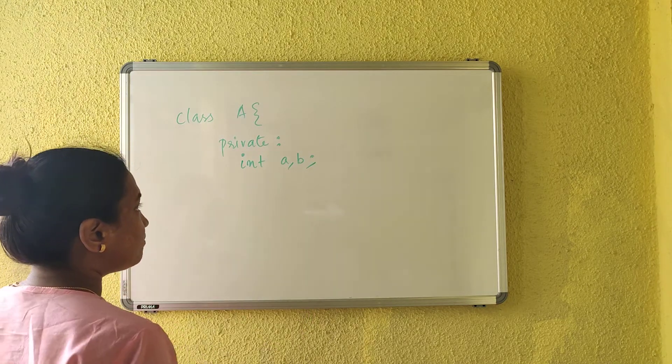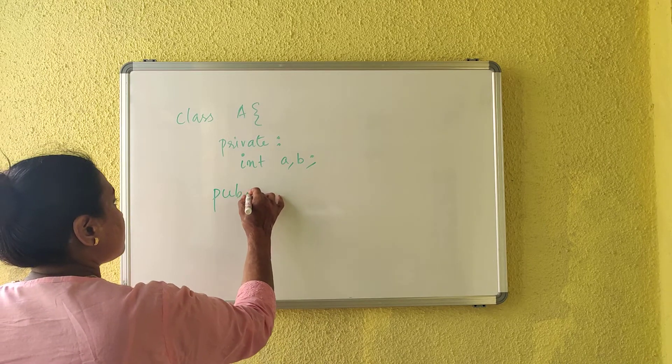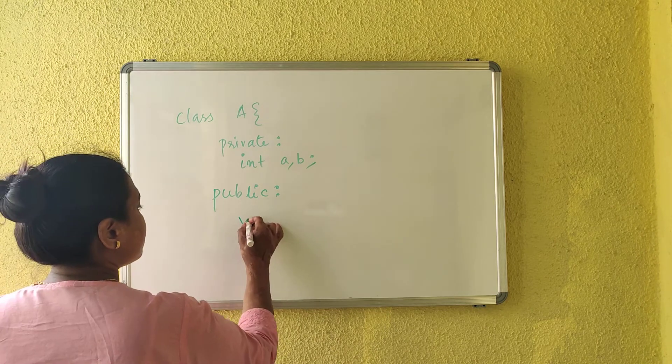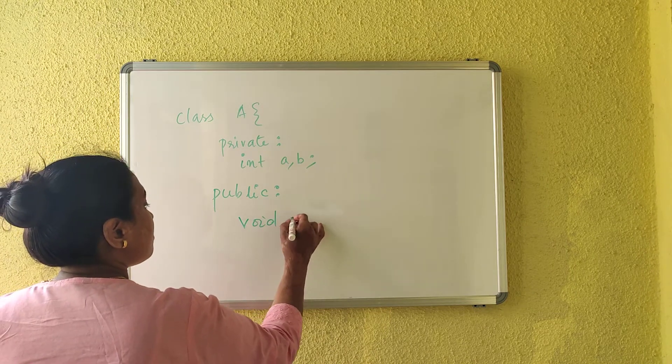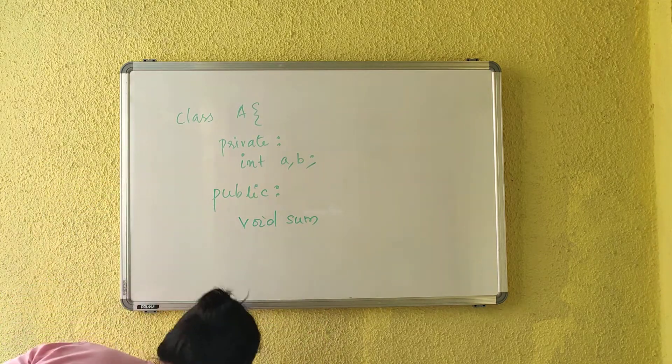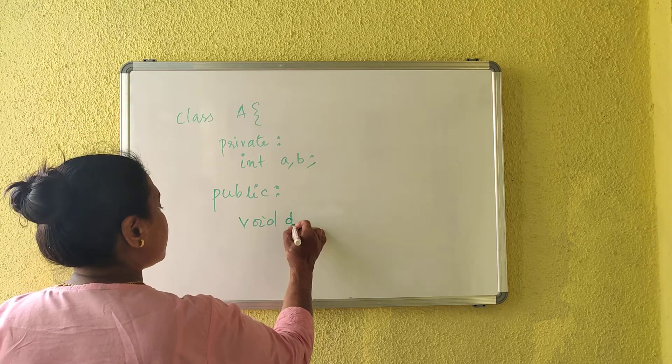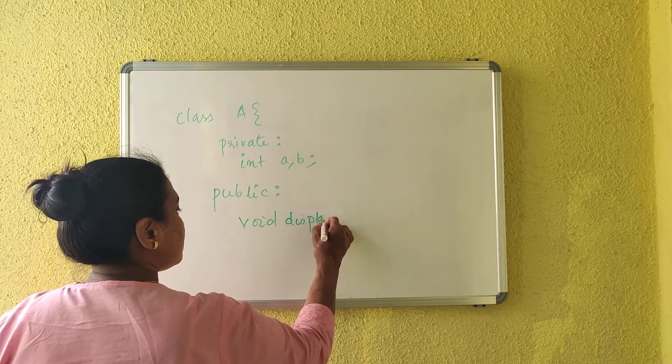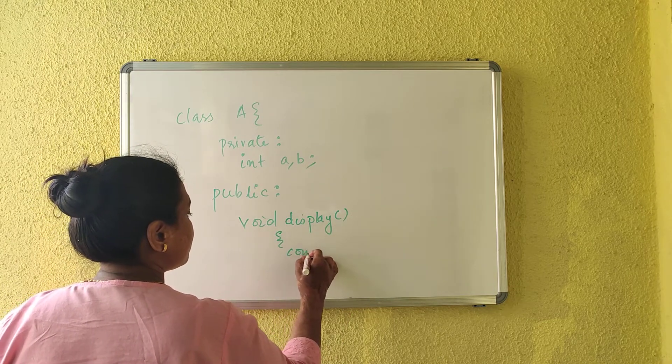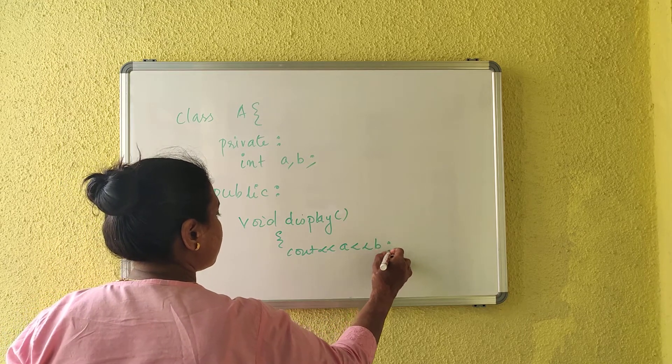So the data members are A and B and they are private. Then you have public access modifier wherein I am going to write a function called display, is a member function, and here what does display going to do? It is going to print A and B.